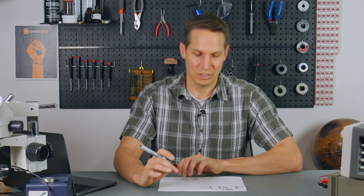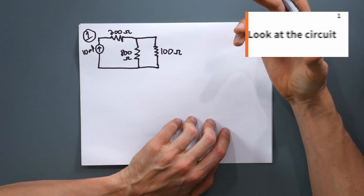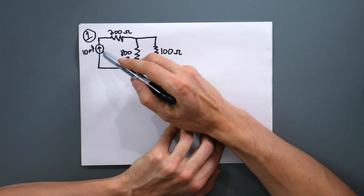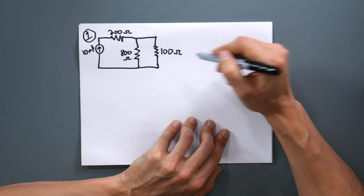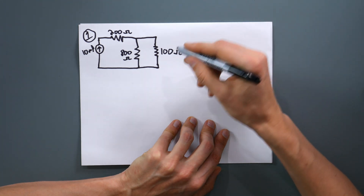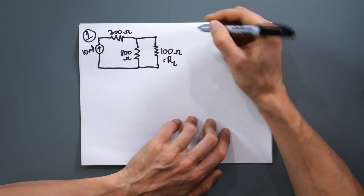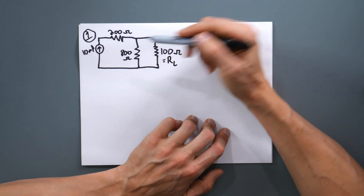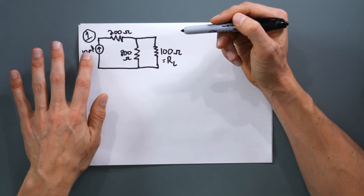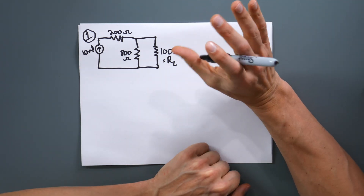So with this very first step, we're going to look at this circuit and think through things. I have a current source of 10 milliamps, 200 ohms, 800 ohms in parallel with this 100 ohms. The 100 ohms is the load resistance. So we've identified that load resistance — parallel, series, current source. That means that later on that current source is going to be an open circuit in a later step.